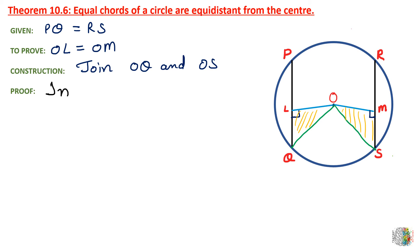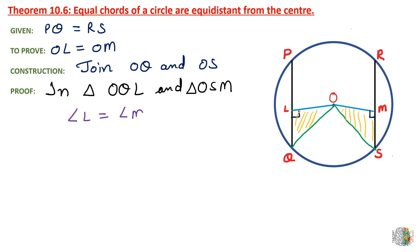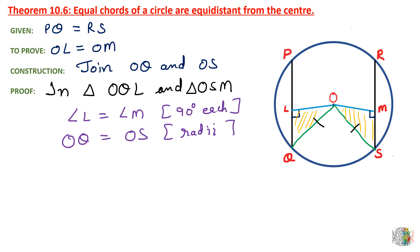In triangle OQL and triangle OSM, we can see that angle L is equal to angle M, because this is 90 degrees each. Similarly, OQ is equal to OS because these are radii of the circle.